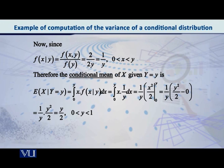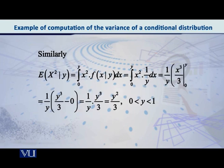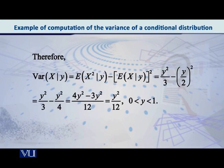Similarly, students, find the expected value of x squared given y. Exactly the same method. And the result, as you can see on the screen, comes out to be y²/3. And again we have to write with it that y lies between 0 and 1. Now that we have found both of these, we can very quickly find the conditional variance.